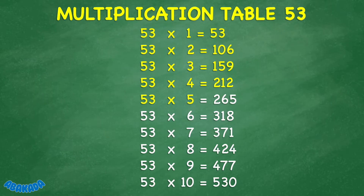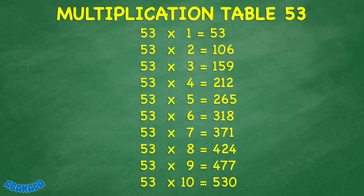53 times 5 equals 265. 53 times 6 equals 318. 53 times 7 equals 371. 53 times 8 equals 424. 53 times 9 equals 477. 53 times 10 equals 530.